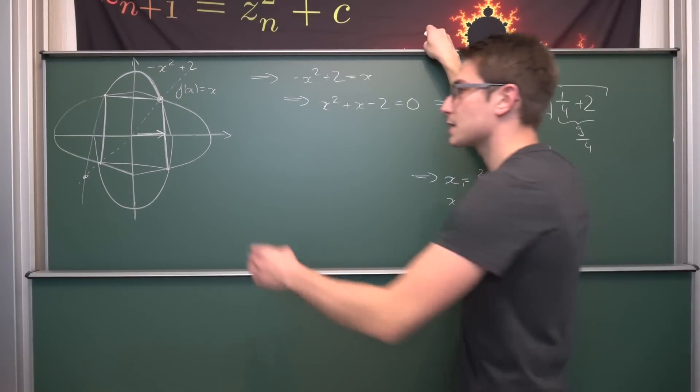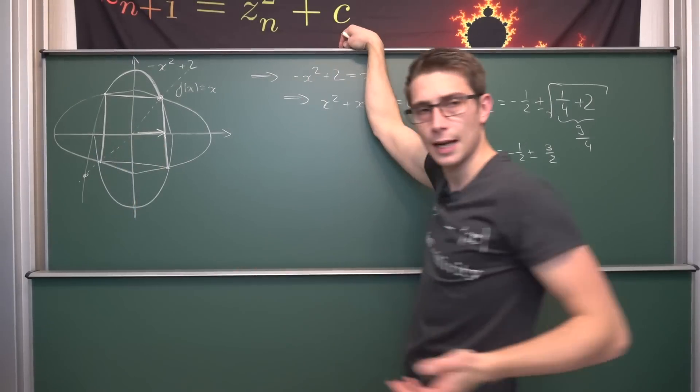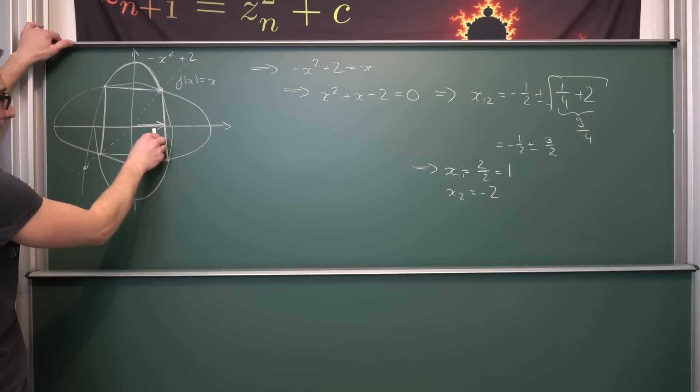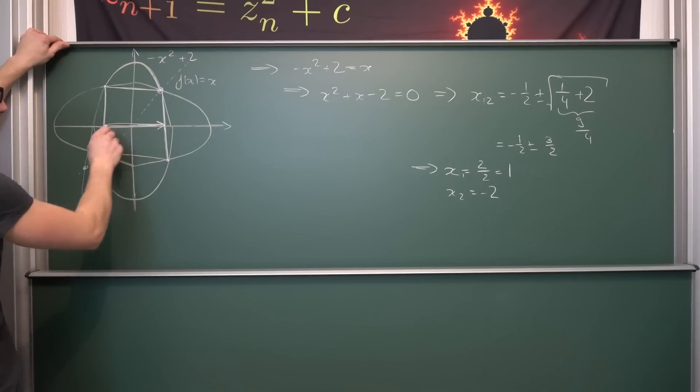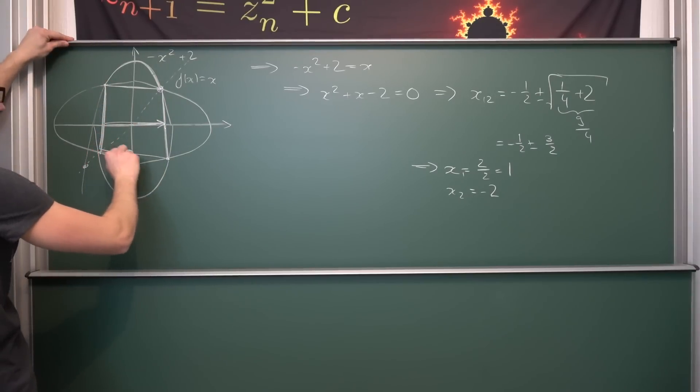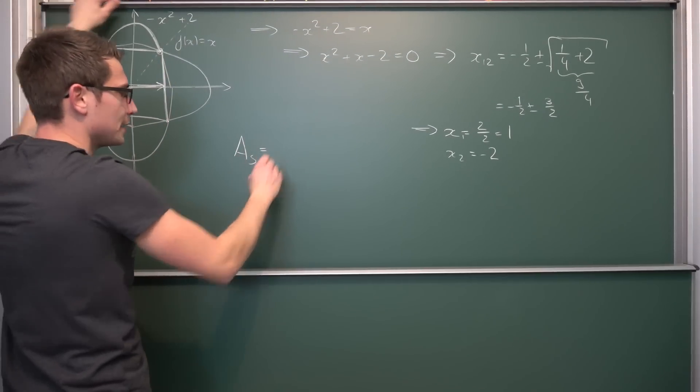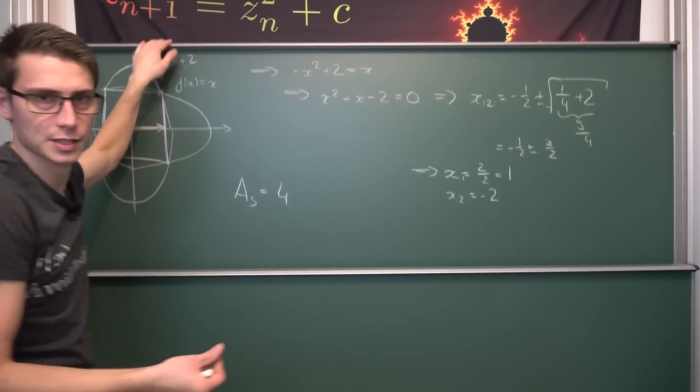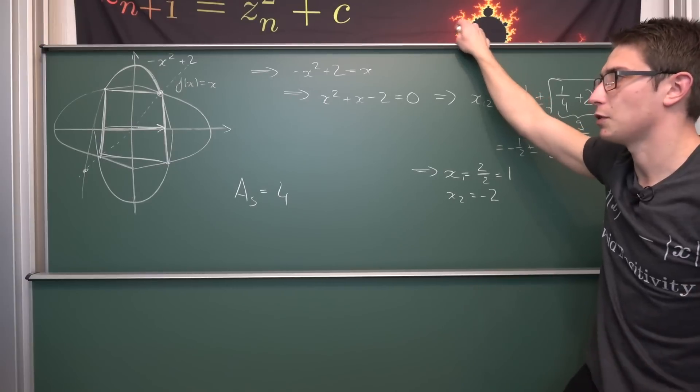This just screams for the quadratic formula. We are going to find out two values of x: x₁ and x₂ being equal to negative 1/2 plus or minus square root of 1/4 plus 2, which gives us 9/4 in the process. If we take the square root of this we are going to get negative 1/2 plus or minus 3/2. The first root being negative 1/2 plus 3/2 is going to give us just 1. And then we got our second root being negative 1/2 minus 3/2, which gives us negative 2. x₂ being equal to negative 2 is not what we are looking for, but we got this other root at x being equal to 1.